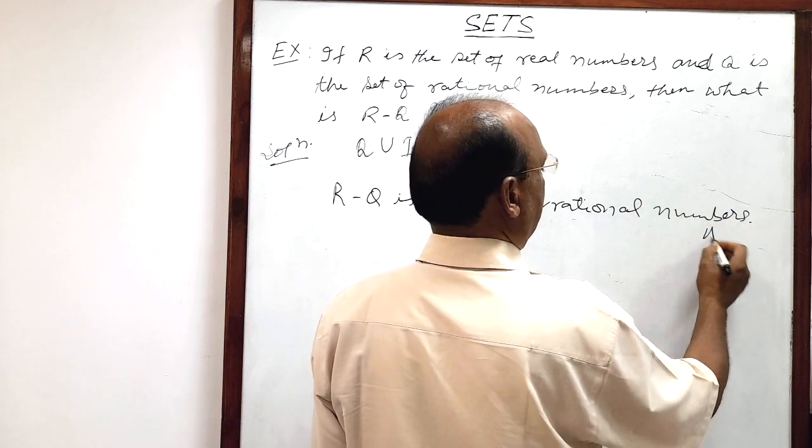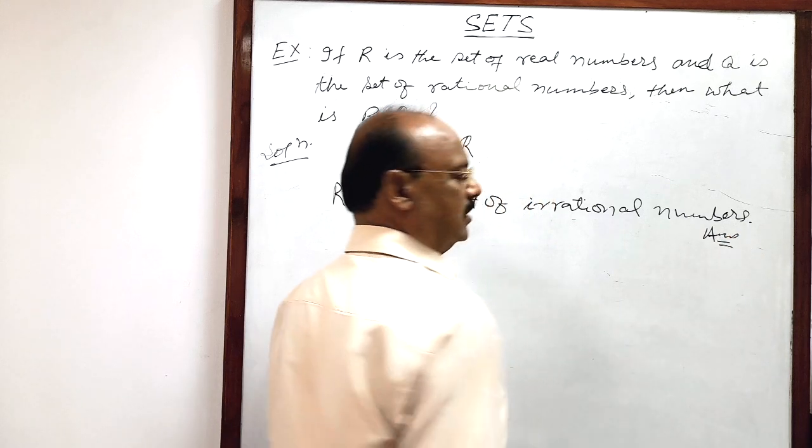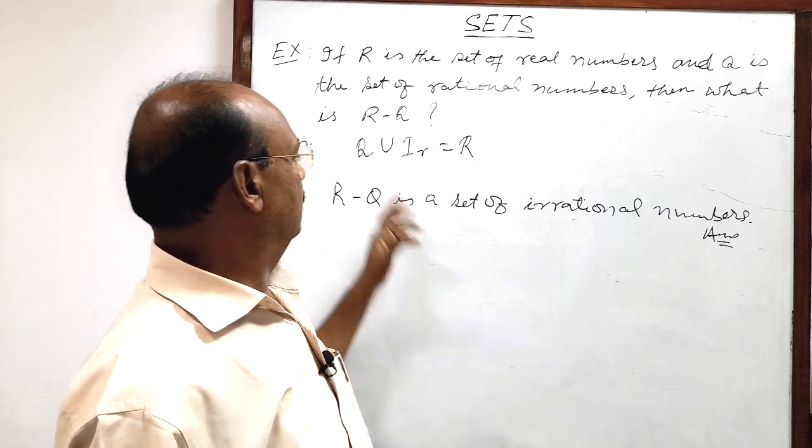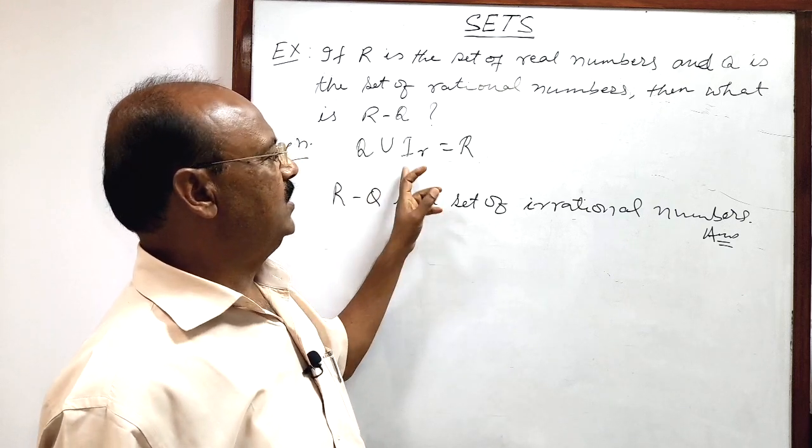Very simple question, this is the answer. Just we should understand that union of the set of rational numbers and irrational numbers is real numbers.